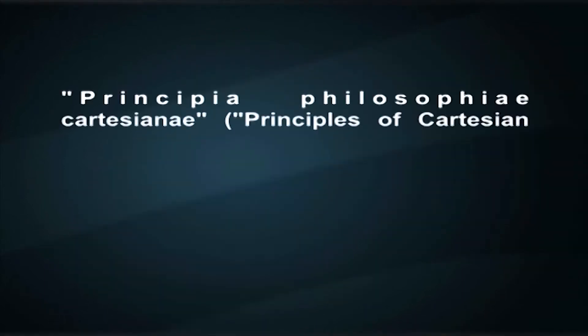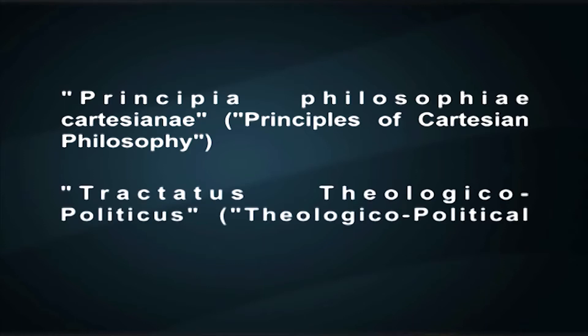Spinoza's first publication was a geometric exposition of the work of Descartes. The two-part Principia Philosophiae Cartesiani, otherwise known as Principles of Cartesian Philosophy, published in 1663. In the early 1660s, he worked on what was to become his magnum opus, The Ethics, but he suspended the work in 1665 in favor of his other work, Tractatus Theologico-Politicus, otherwise known as Theologico-Political Treatise, which was eventually published anonymously in 1670.